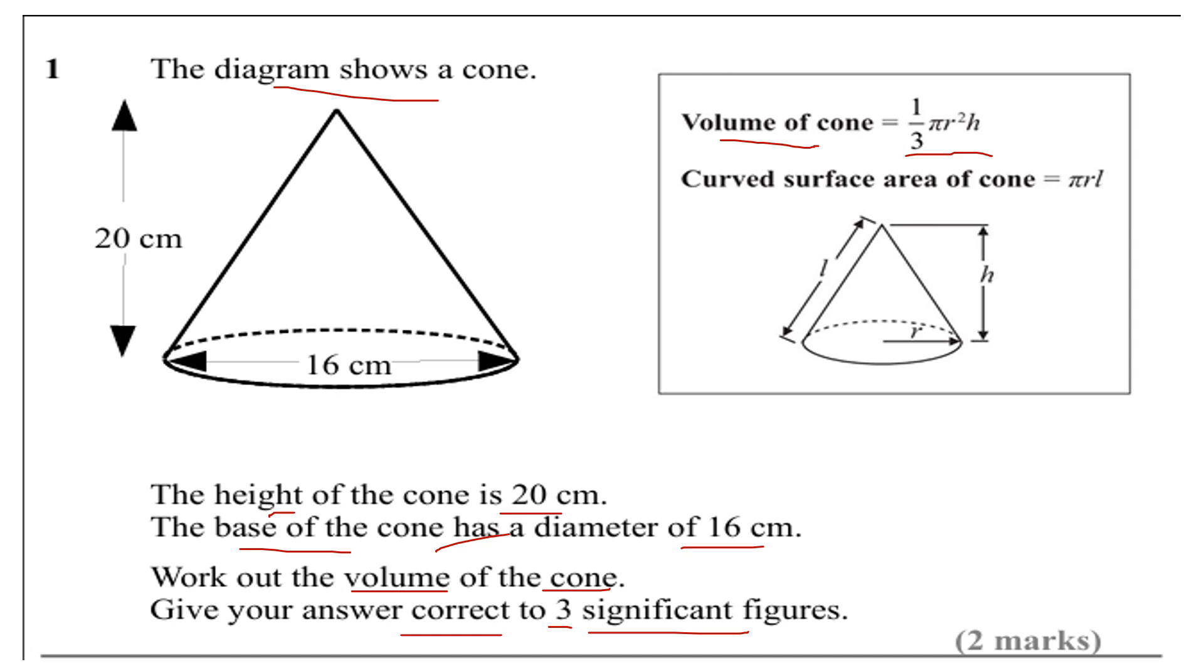h is equal to 20. d equals 16, which is what I call diameter, but we want the radius guys, so that'll be half of it. So radius here will be half of that, so that'll be eight.